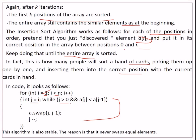The inner loop continues while j is greater than 0 and a[j] is less than a[j minus 1], because we want them in increasing order. We swap them and then decrement j. There may be different versions of insertion sort, but the basic idea is that the algorithm is stable because it never swaps equal elements.